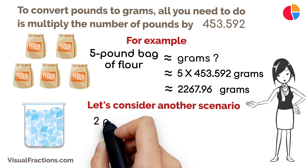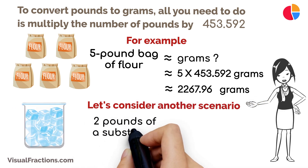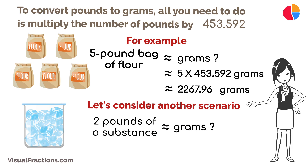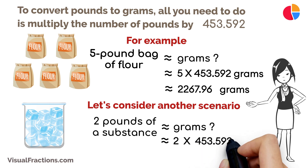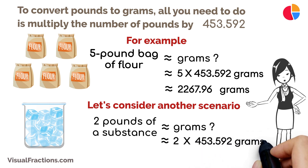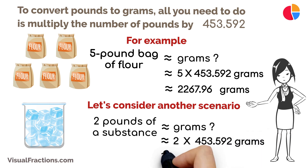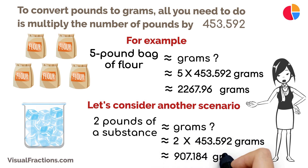That gives a total of approximately 2267.96 grams. Let's consider another scenario: if you're a scientist conducting experiments and you need to convert two pounds of a substance to grams, just multiply two pounds by 453.592 to get about 907.184 grams.